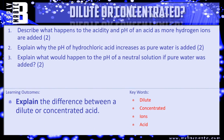Let's have a look at a few questions. Question one: describe what happens to the acidity and pH of an acid as more hydrogen ions are added — worth two marks. Question two: explain why the pH of hydrochloric acid increases as pure water is added — two marks. Question three: explain what would happen to the pH of a neutral solution if pure water was added — also two marks.